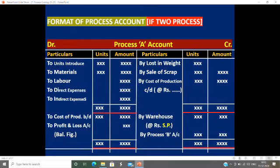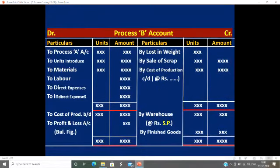On the debit side — cost of production, B by D. On the credit side — by warehouse, we will multiply by the sale price. By the next process, or Process B, and the difference on the debit side will be transferred to profit and loss. Then after, we will go to the next process.